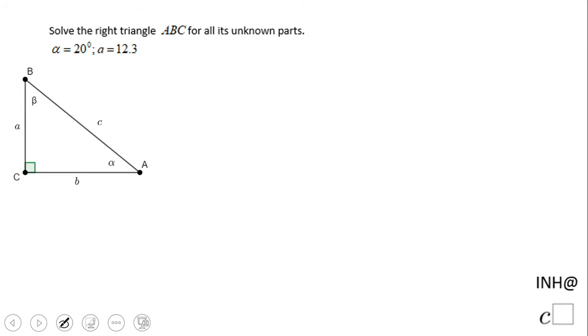Welcome or welcome back to C Square. In this problem, we're going to solve the right triangle ABC for all its unknown parts. We have some information given to us: alpha, which is 20 degrees, side a which is 12.3, and this angle here is 90 degrees.